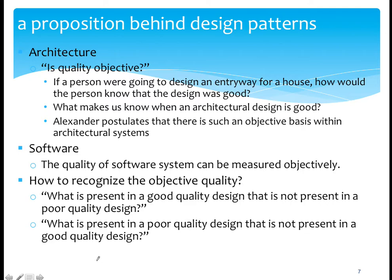Scientifically, if you find one counterexample, the whole proposition is wrong. But in a practical sense, we may have some consensus. A majority of people may agree on what kind of building looks beautiful or good, and what kind of building looks not that good. So in a not very scientific, but practical way, we say there is a quality objective, and based on that, design patterns are formulated.